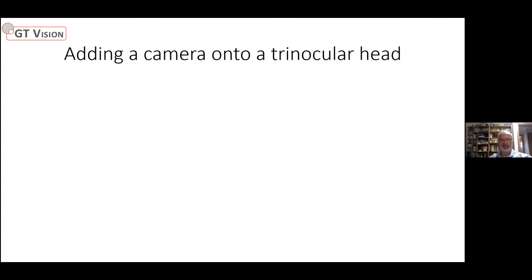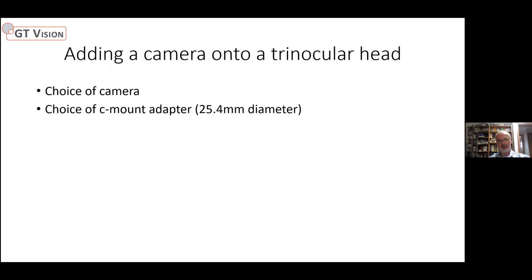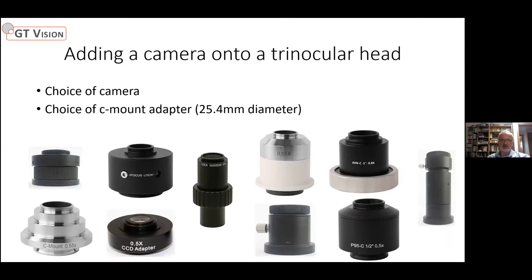If we think about adding a camera onto a trinocular head, you might think it's easy — buy the camera, pop it on and off you go — but it's not quite as straightforward as that. A couple of things to take into account: first, what camera do I buy — I'll come to that later — and another criteria is what choice of c-mount adapter. The c-mount adapter goes between the trinocular port of the microscope and the camera. You need to be quite careful to choose the appropriate one for your microscope and camera.